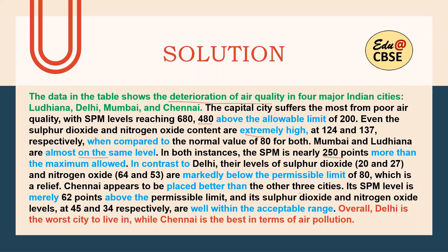Chennai appears to be placed better than the other three cities. Its SPM level is merely 62 points above the permissible limit — though it is above, it is merely 62 points. And its sulfur dioxide and nitrogen oxide levels at 45 and 34 respectively are well within the acceptable range. The conclusion is: overall, Delhi is the worst city to live in while Chennai is the best in terms of air pollution. The green text is the opening line, the black and blue is the body with comparisons and contrasts, and the red is the conclusion. The blue words are the functional vocabulary for comparison and contrast.